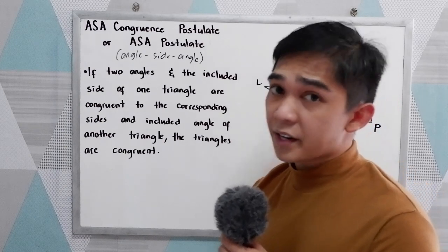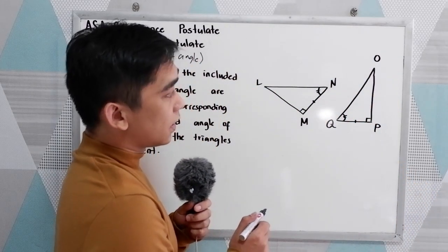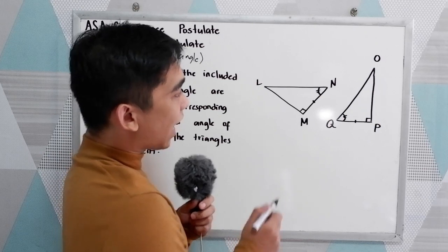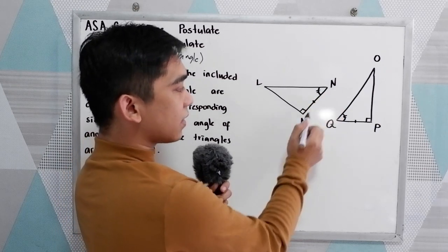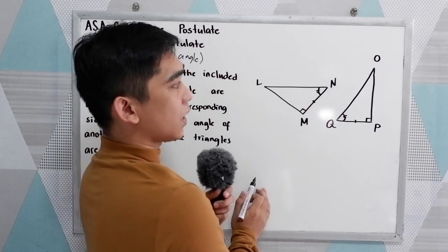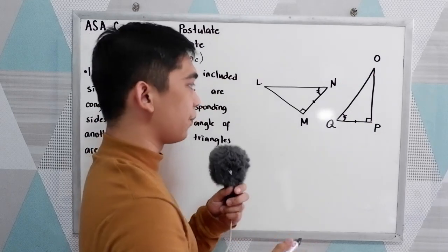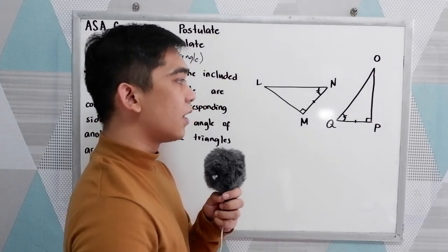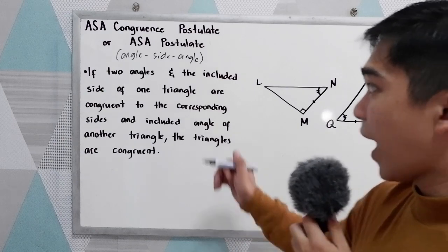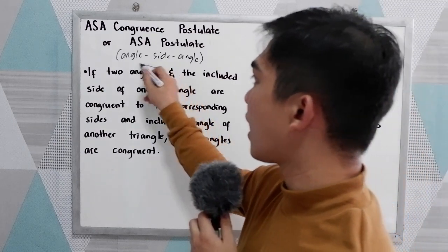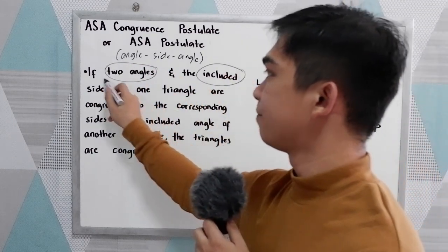To further understand, let's have this illustration. We have triangle LNM and triangle OPQ. In our postulate, we need to have two angles and an included side.